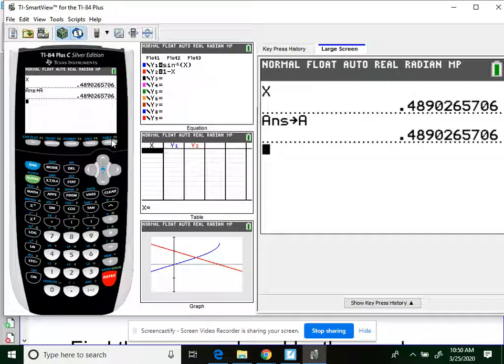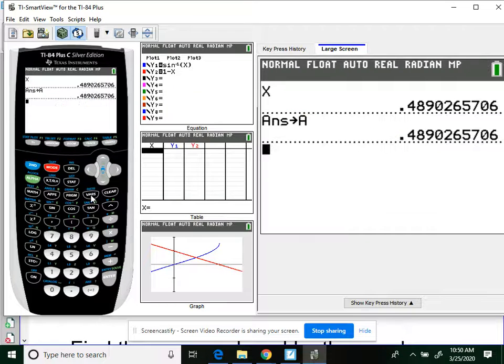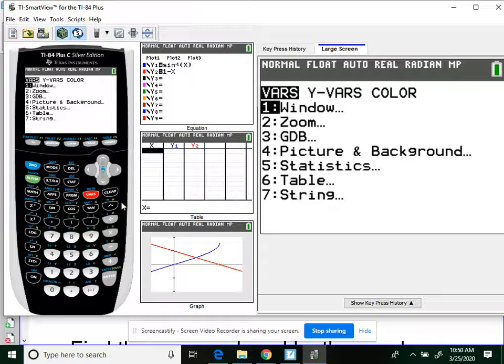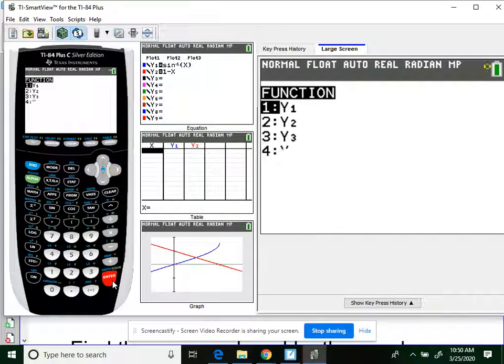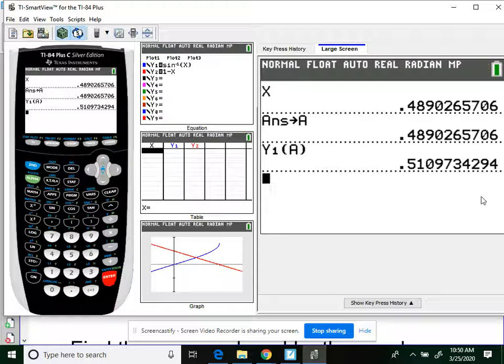What I'm going to do is I'm going to hit x, enter, and I'm going to store that entire decimal. Store, STO, it's right above on. Alpha A. And then I'm going to store. Now I want the y value also. I also want that y value.